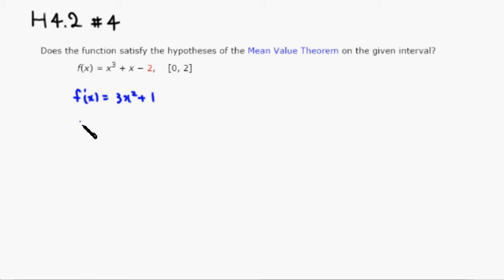Then we compute f of 2 minus f of 0 over 2 minus 0.